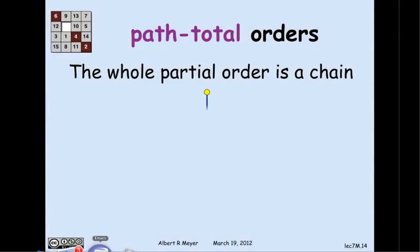Another way to say path total is that the whole order looks like a chain: given any finite set of elements, there's a biggest one, then the next biggest, and so on. The basic example of path total is numerical 'bigger than.' A basic example of something typically not path total would be subset containment, where you can have two sets neither of which is contained in the other.